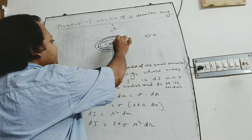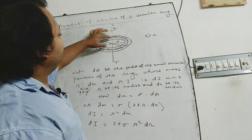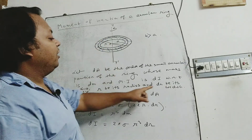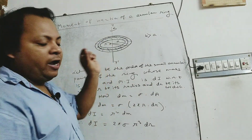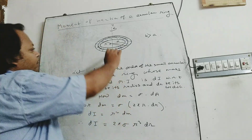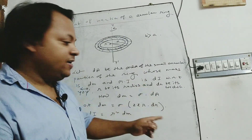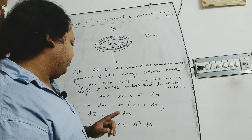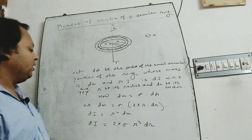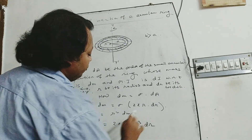Consider a very small annular portion of the ring whose center is O, radius is r, and dr is its very small width, giving area dA equal to 2 pi r dr. The mass of this annular portion dM equals sigma into dA, so dM equals 2 pi sigma r dr. The moment of inertia of this annular portion with respect to yOy prime is dI equal to r squared into dM, or dI equal to 2 pi sigma r cubed dr.